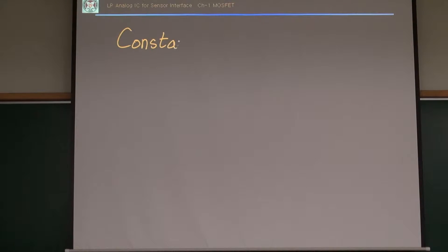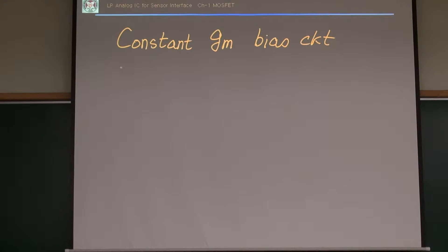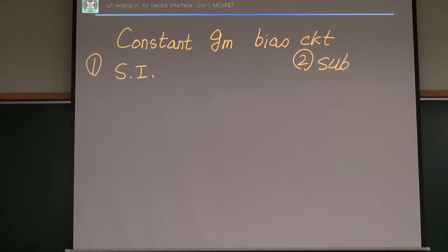For the self-biased current source, we call that one a constant gm biasing circuit. We have two versions: one is a strong inversion version and the other is a sub-threshold version.